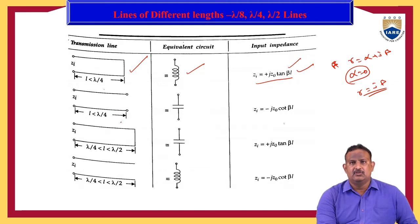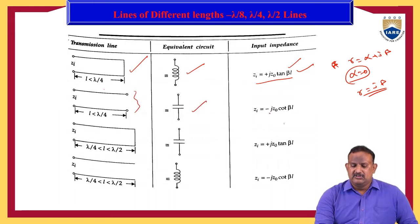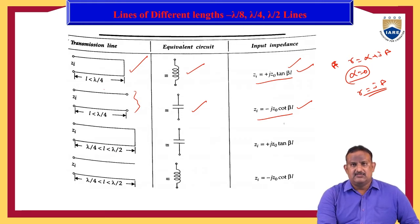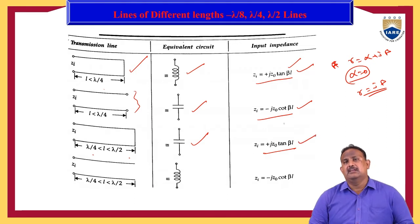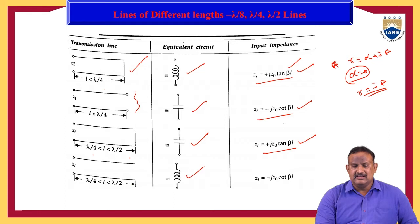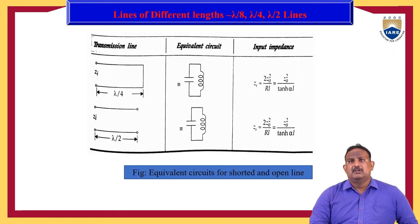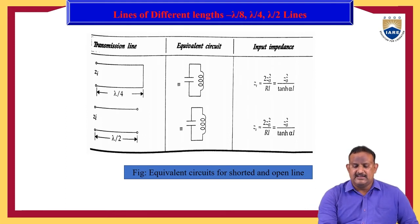If the length of the transmission line is less than lambda by 4 and it is open circuited, it behaves as a capacitor and the input impedance is Z_i = −j·Z₀·cot(βl). If the length of the line is between lambda by 4 to lambda by 2 and short circuited, it behaves as a capacitor with input impedance Z_i = j·Z₀·tan(βl). If open circuited, it behaves as an inductor with Z_i = −j·Z₀·cot(βl).